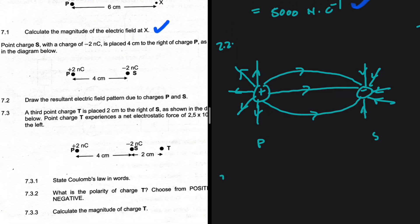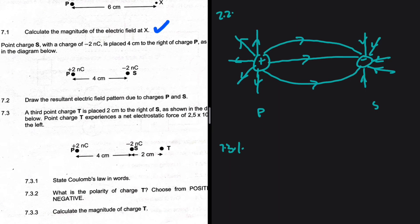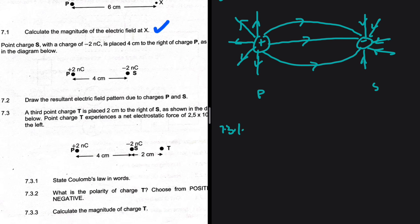For 7.3.1, we're supposed to define Coulomb's Law. Note that the law refers to the square of the distance between the charges — not between their centers. Saying 'between the centers' applies to gravitational law, not Coulomb's Law. We don't talk about the center of a charge here.